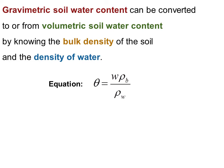And the way these all relate to each other is through this equation. The volumetric water content theta is equal to gravimetric water content W times the bulk density, rho B, divided by the density of water, rho W.